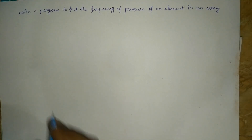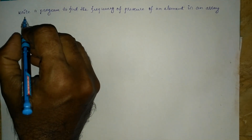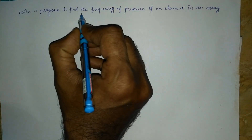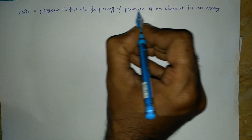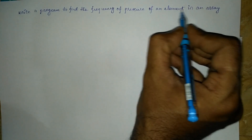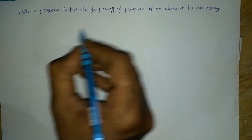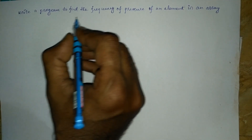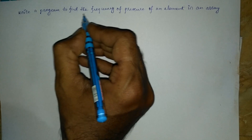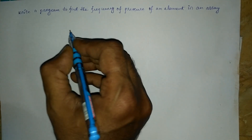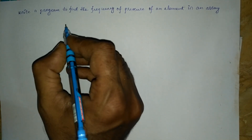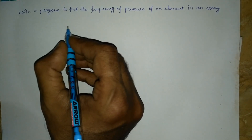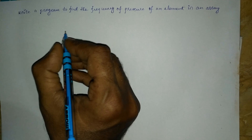Hello, my dear students. In this video we are going to write a program to find the frequency of presence of an element in an array. Here frequency means how many times a particular number has appeared in the given list of elements.